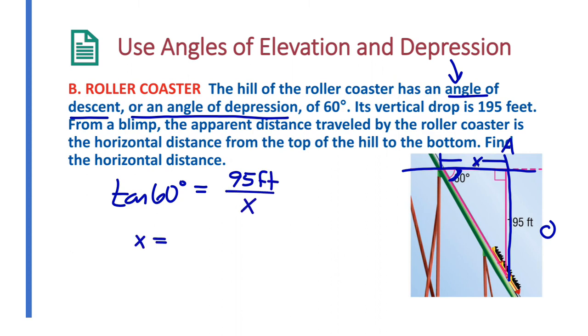which simplifying it, x is equal to that 95 feet, all divided by the tangent of 60 degrees. Remember, you multiply x over, and then you're going to divide by the tangent of 60. I did it in one step. And then when we simplify this, x is about 112.6 feet in length.